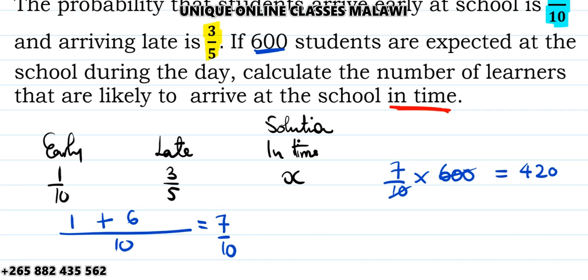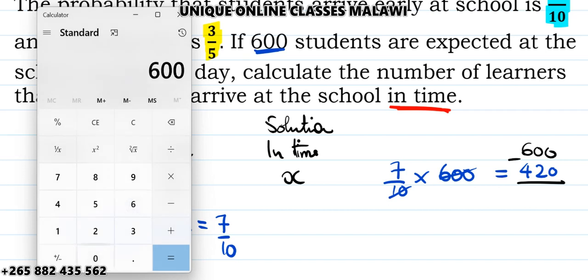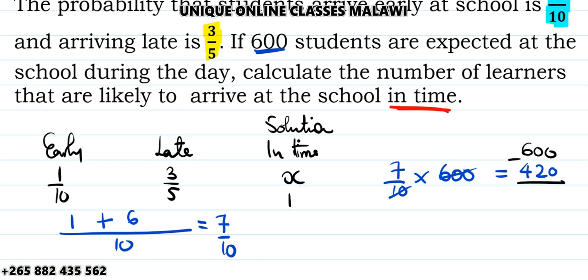But remember, we have 600 students who are expected to arrive at the school. So what's left is 600 minus 420. We're going to have 600 minus 420, which equals 180. So we have 180 as the remaining number of students.